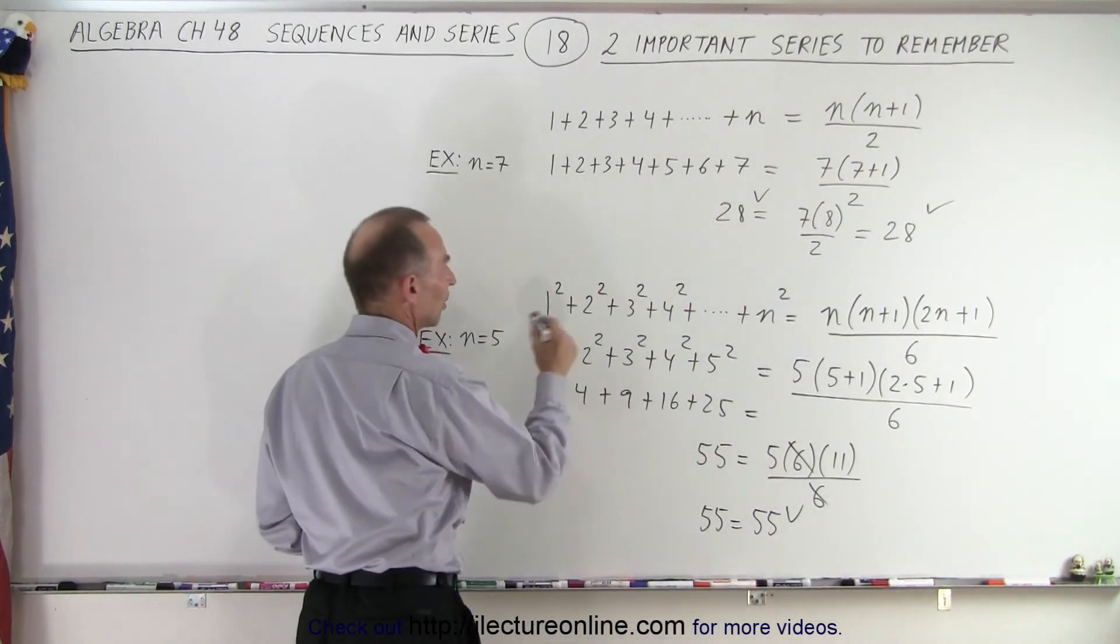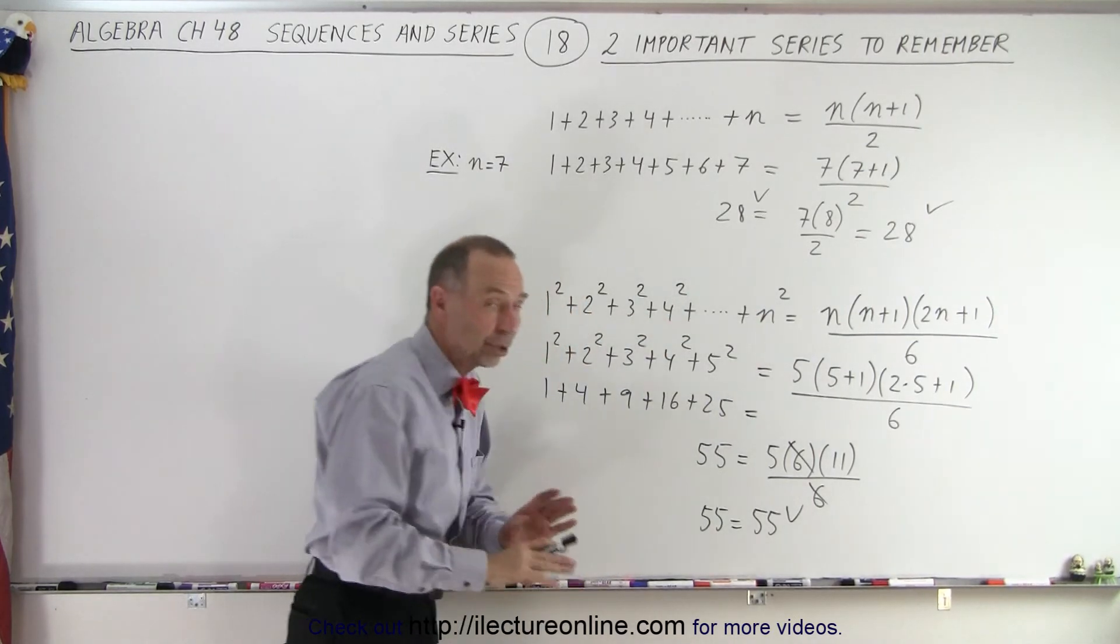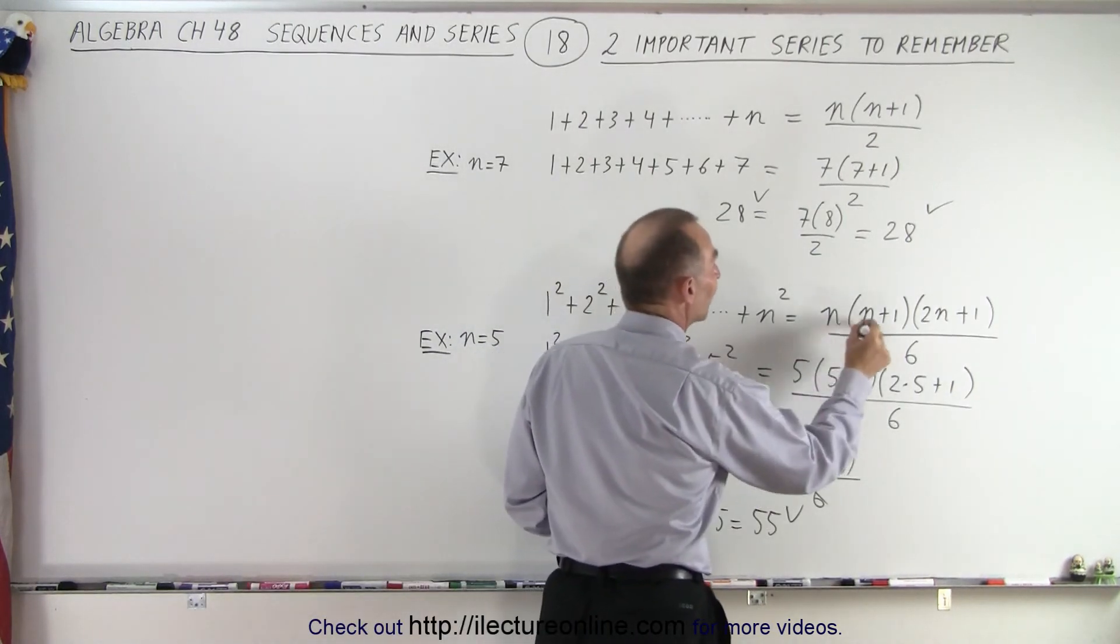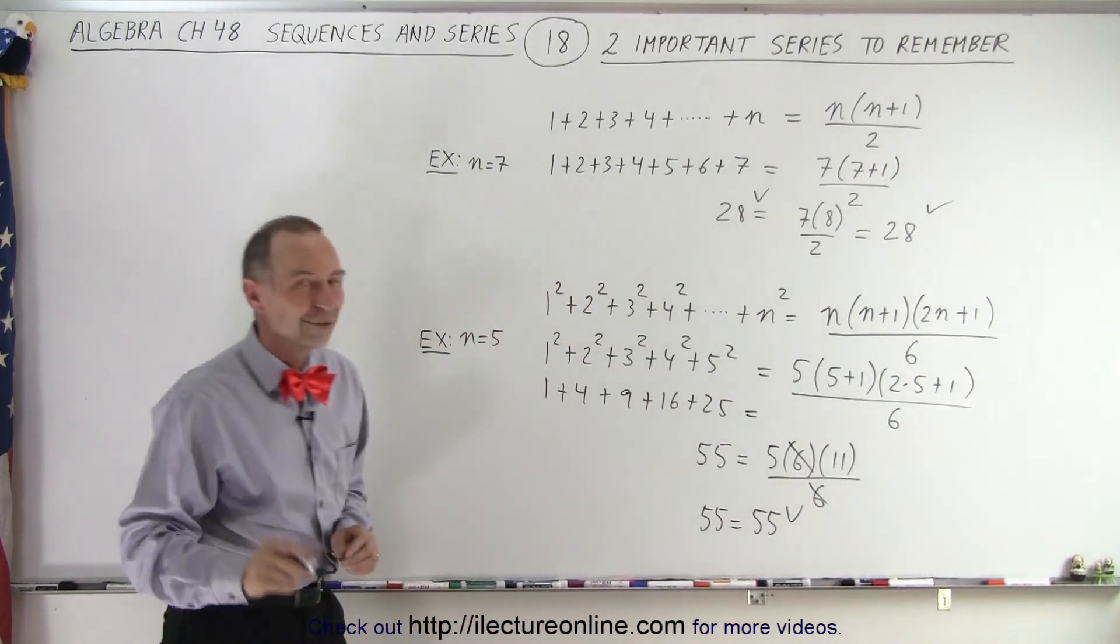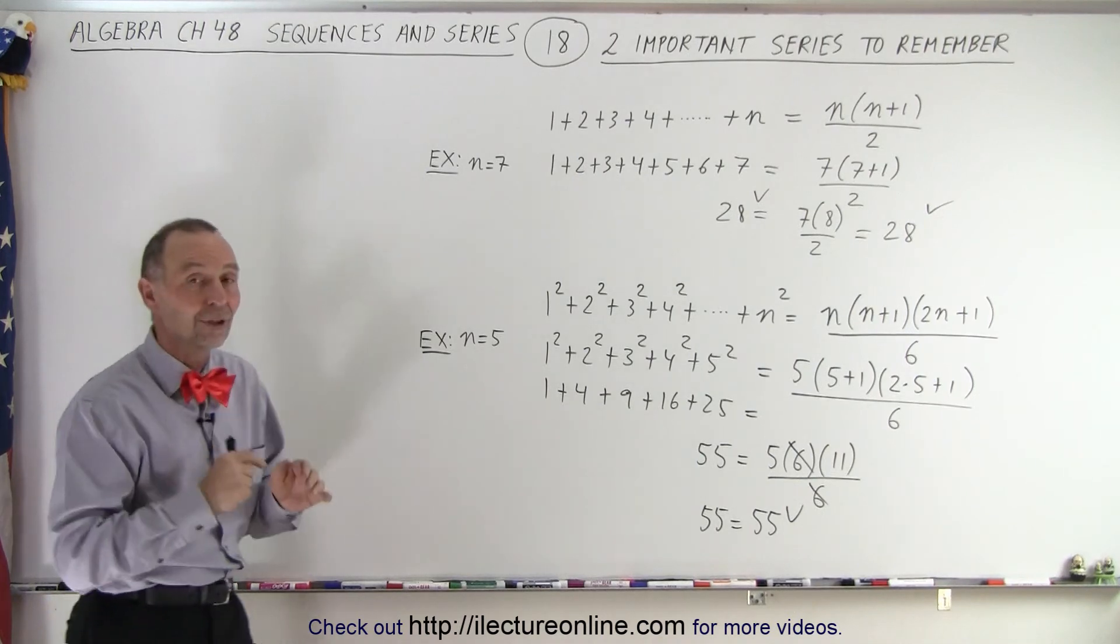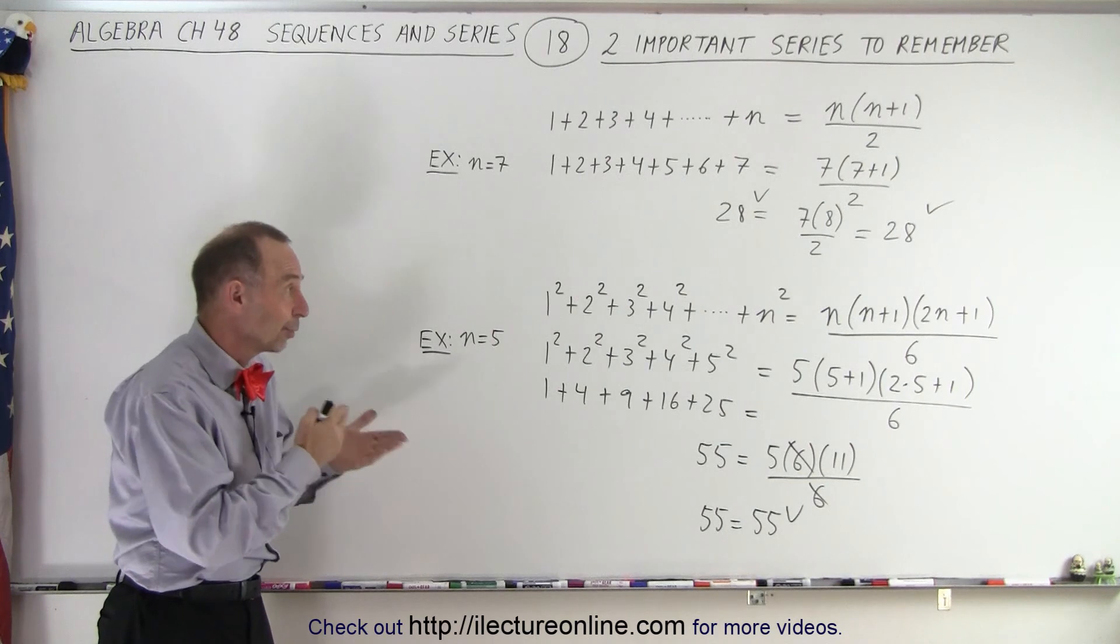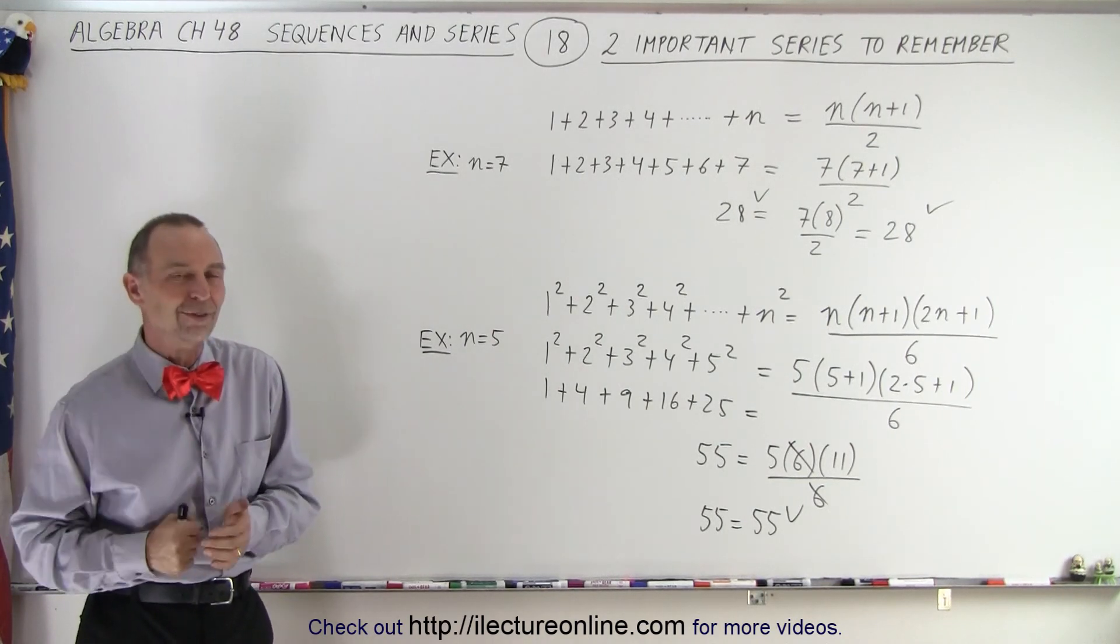And if you get something that looks like this: 1 squared plus 2 squared plus 3 squared plus 4 squared, all the way up to n squared, regardless what n is equal to, that will always be equal to n times n plus 1 times 2n plus 1 divided by 6. Try it, it works for every value. And so therefore, it's important that we remember at least those two particular series, because that is going to come up all the time in many situations. And that is how it's done.